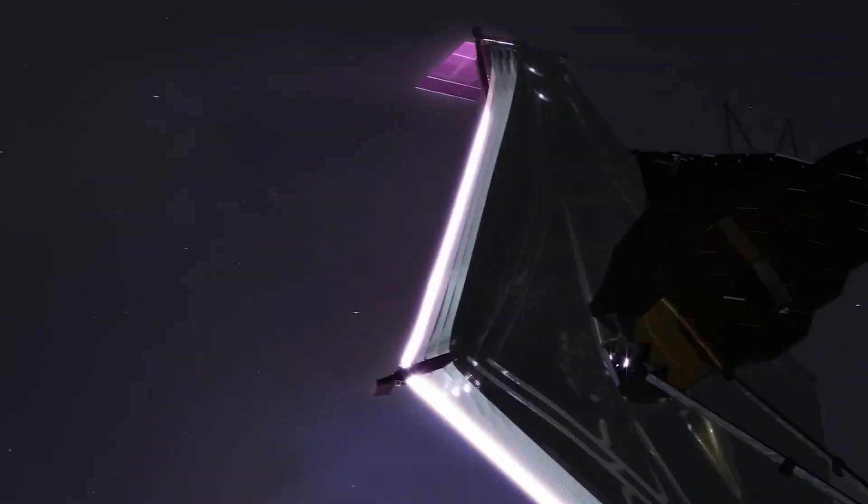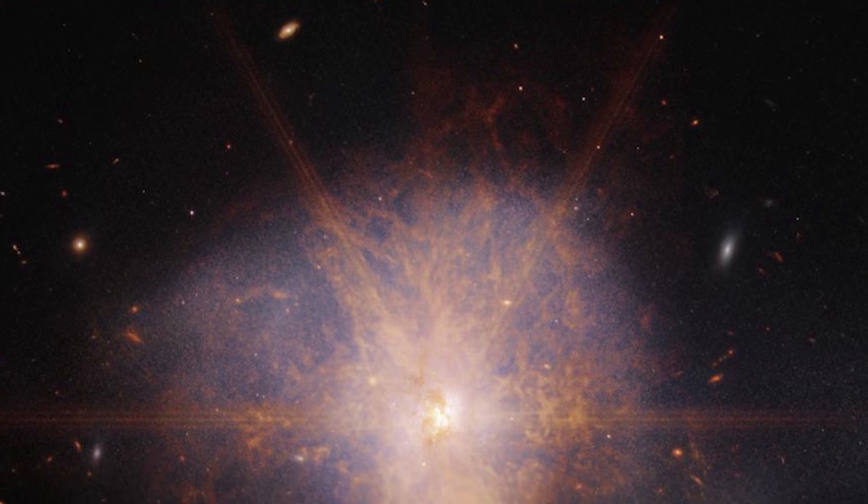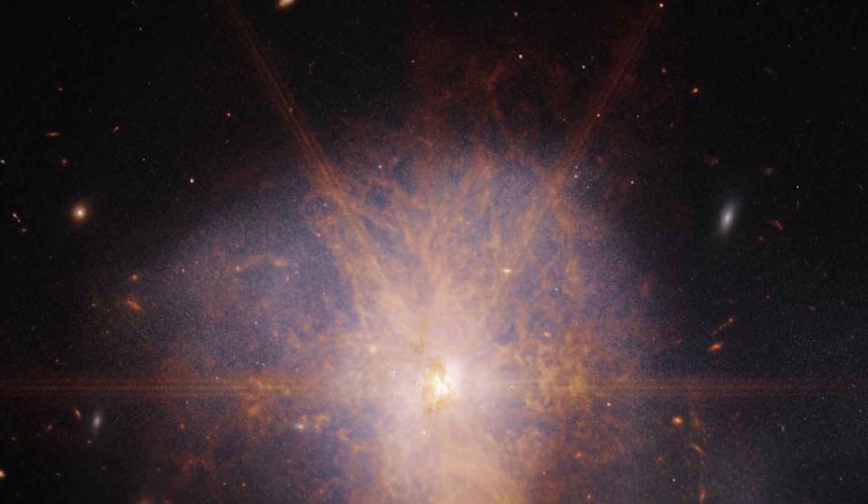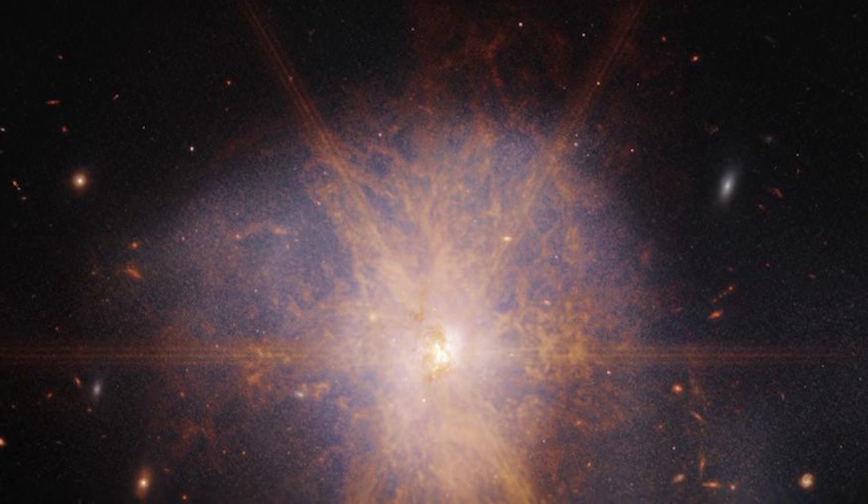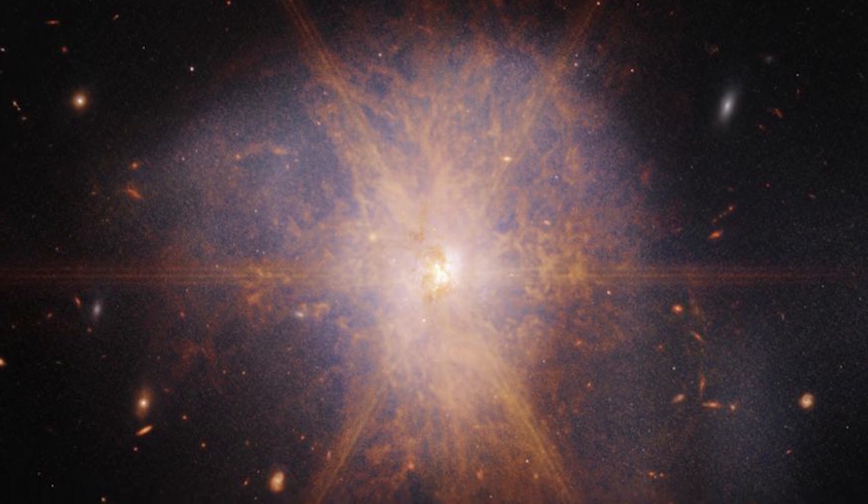The latest views from the James Webb Space Telescope show an impressive galactic merger of the two galaxies. This image also shows faint tidal tails extending from the outskirts of the merger, indicating the gravitational pull between the two galaxies.